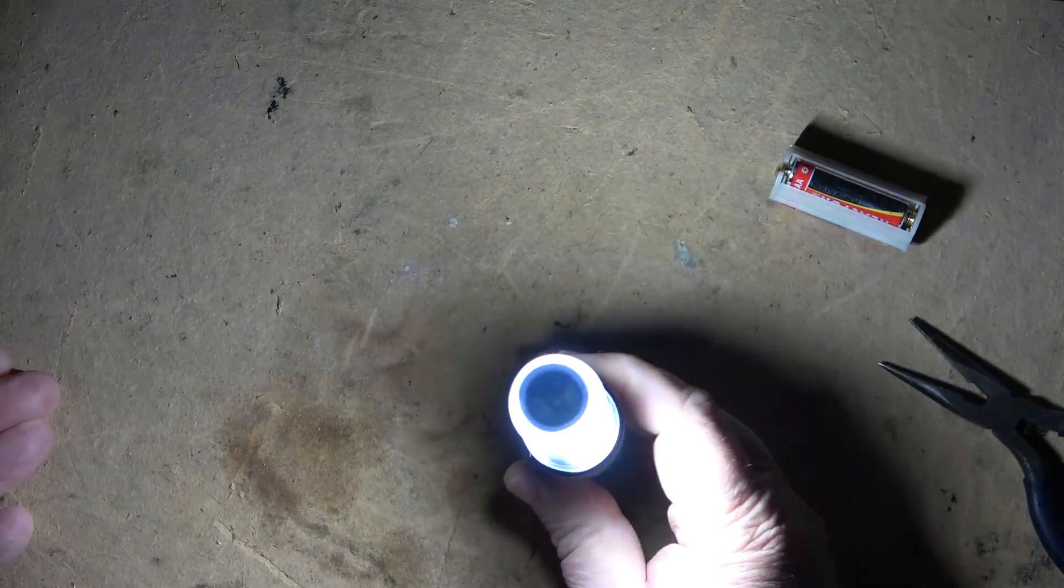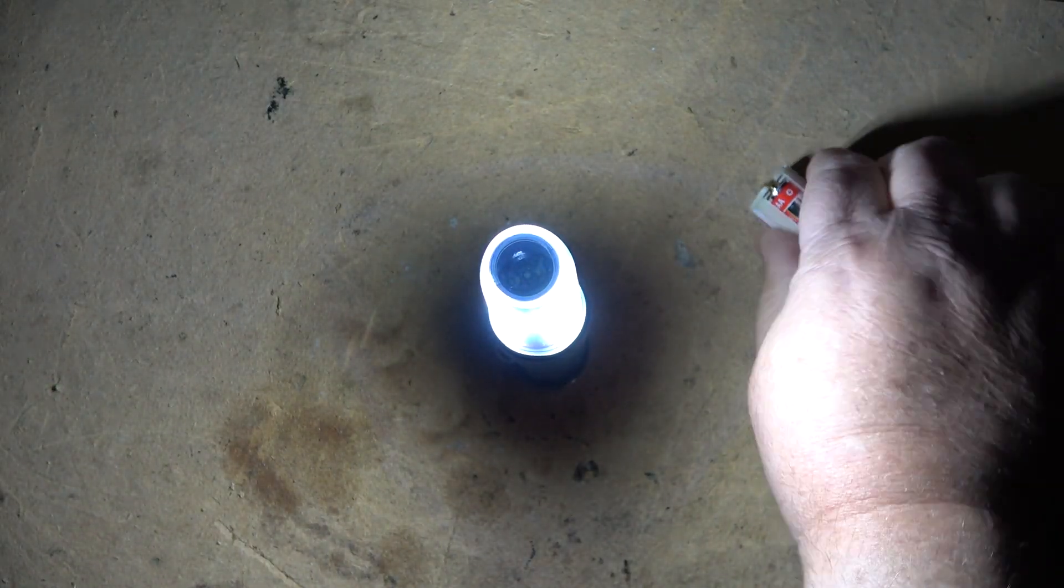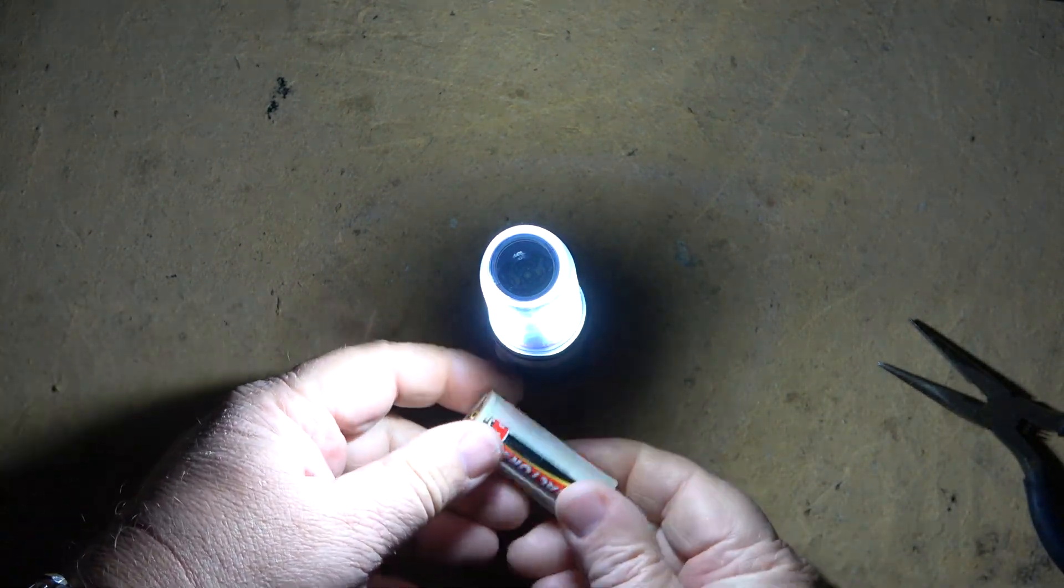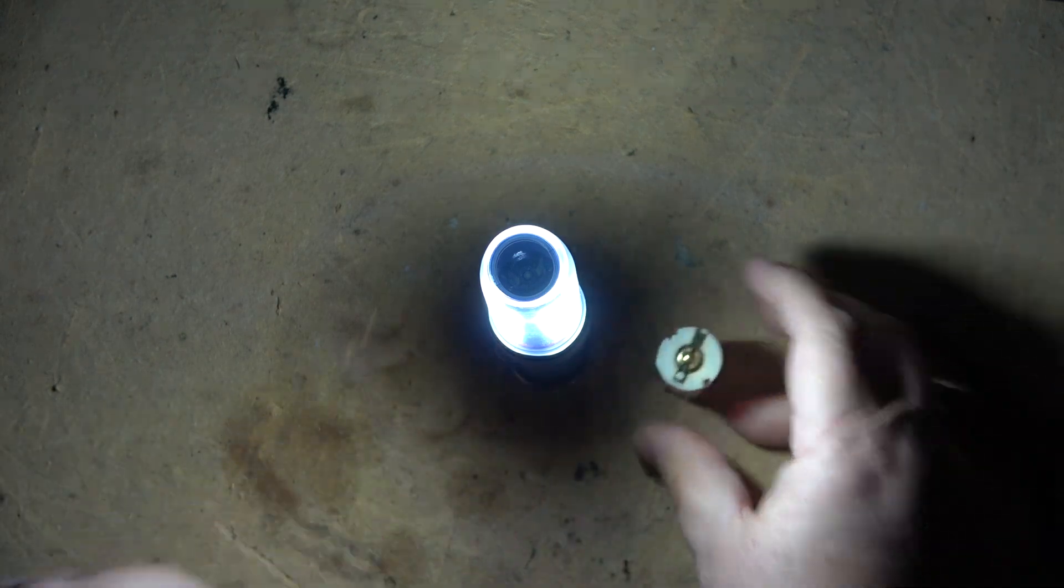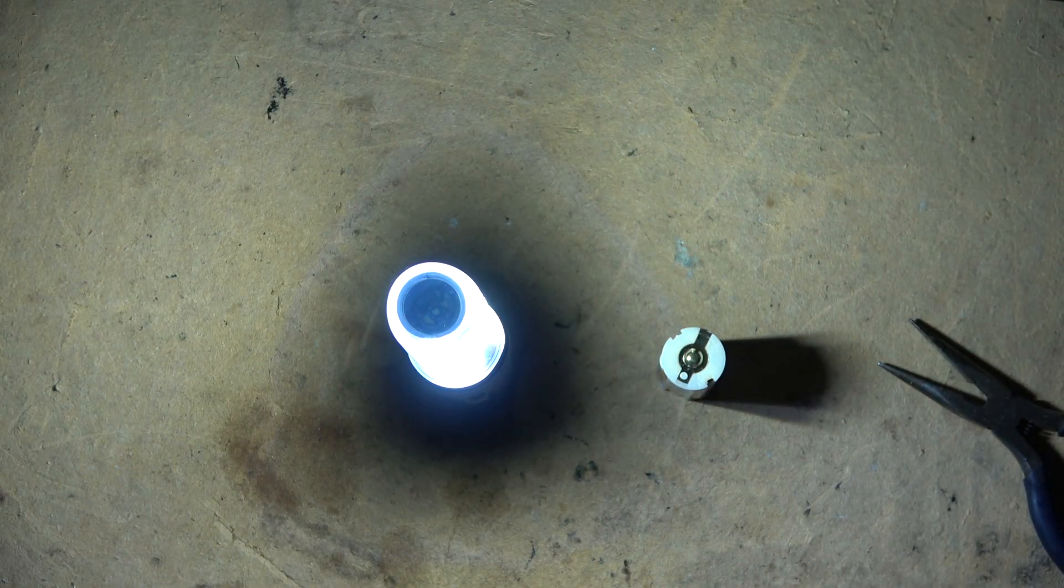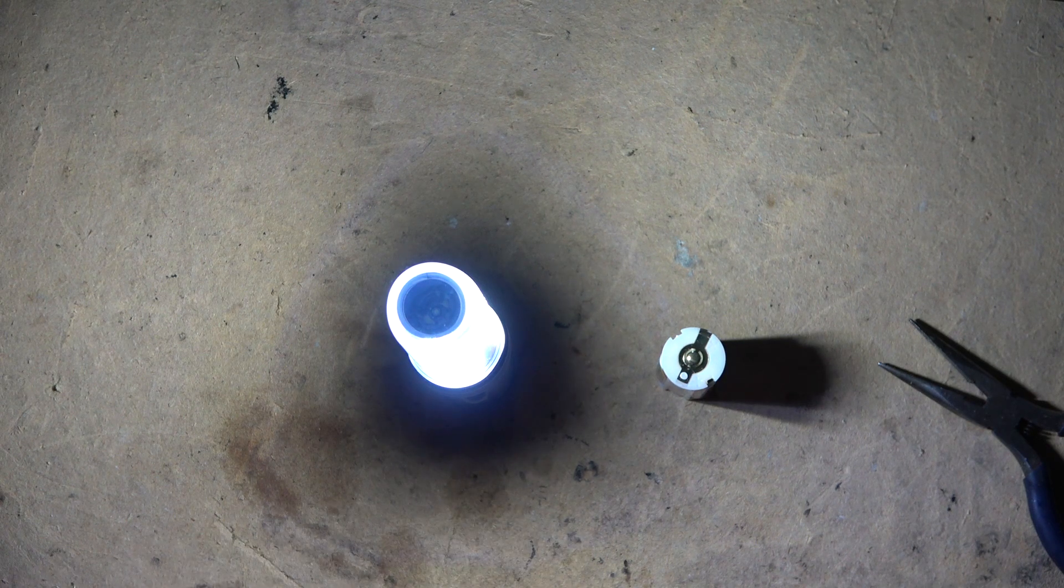And with an 18650 it's going to run a heck of a lot longer than it ever did with these AAA batteries that you have to keep buying new ones all the time. If you got one of these Reactor flashlights, that's a way you can give yourself a much more usable light source, and it's fully rechargeable.